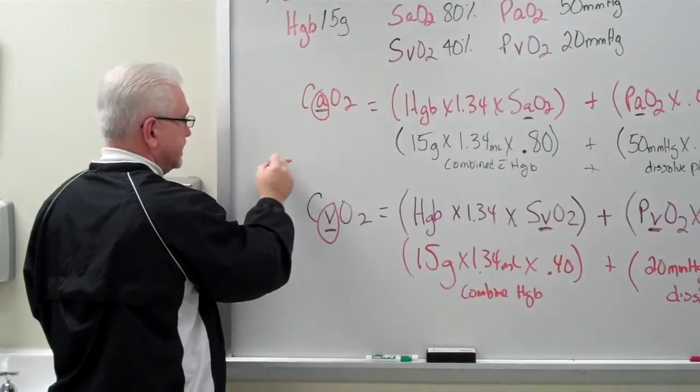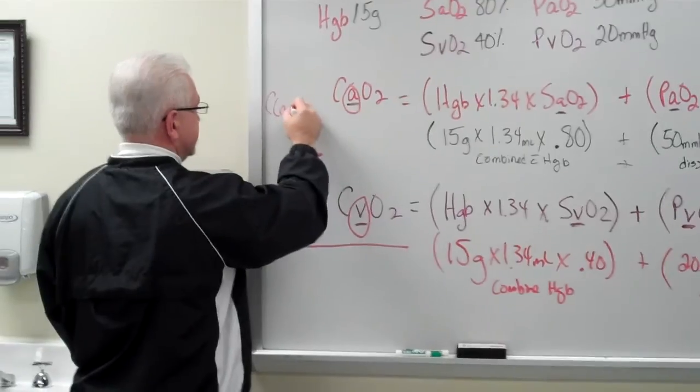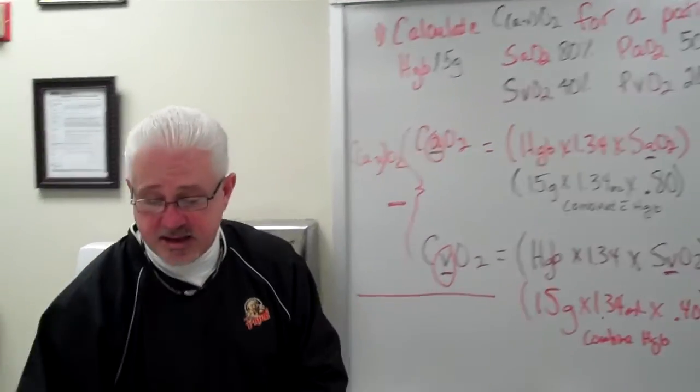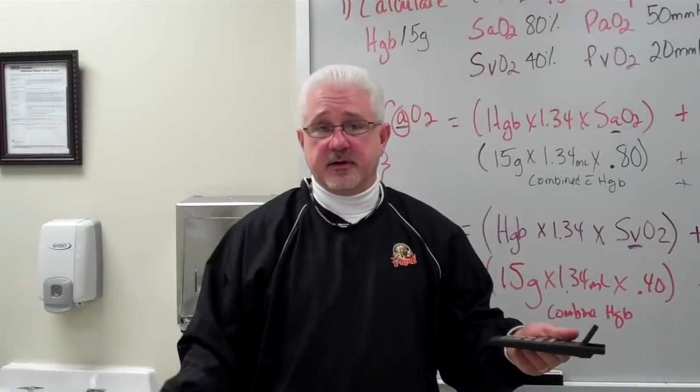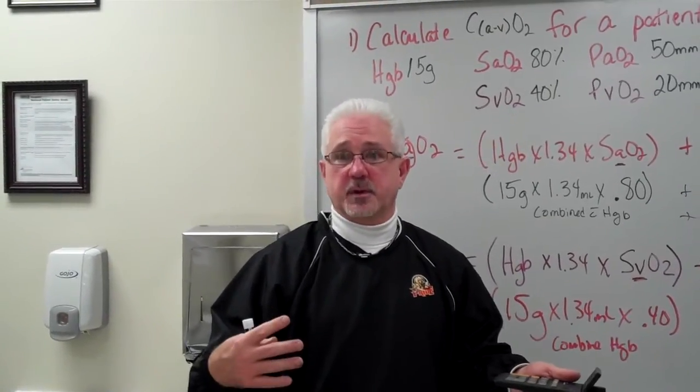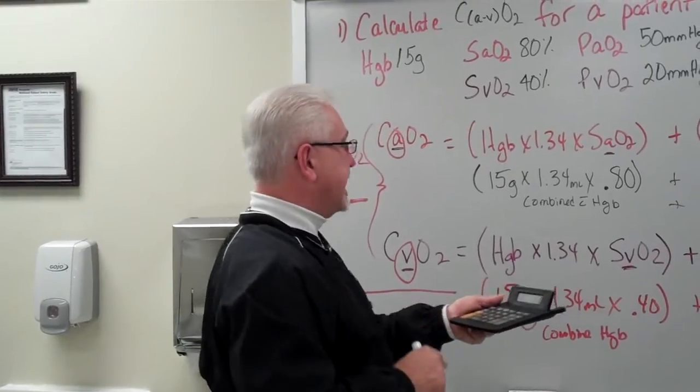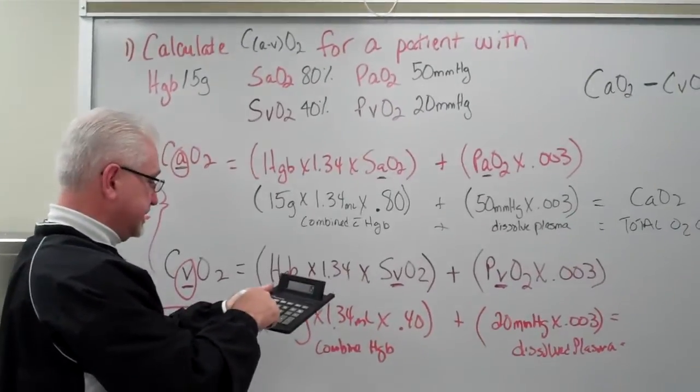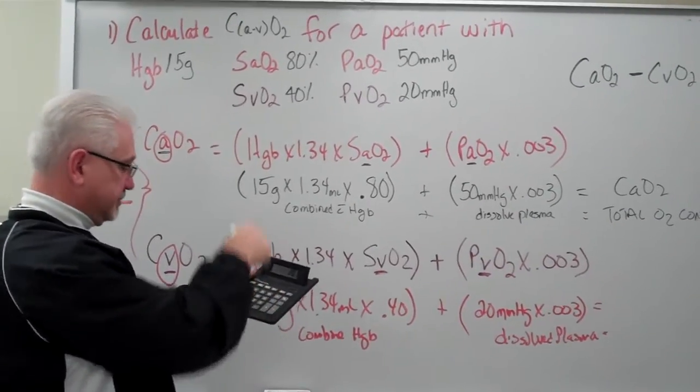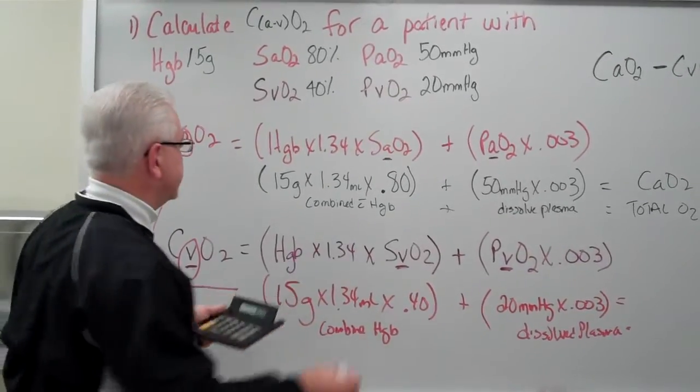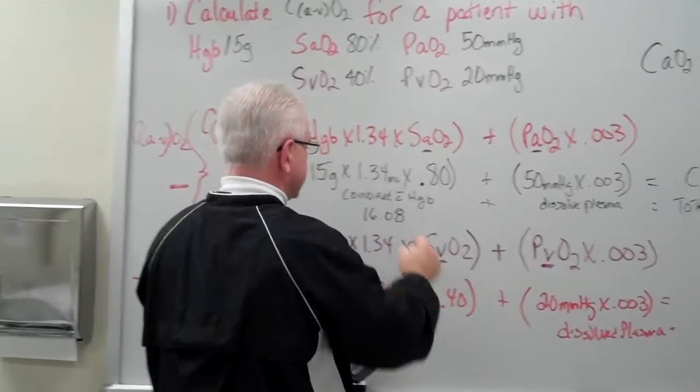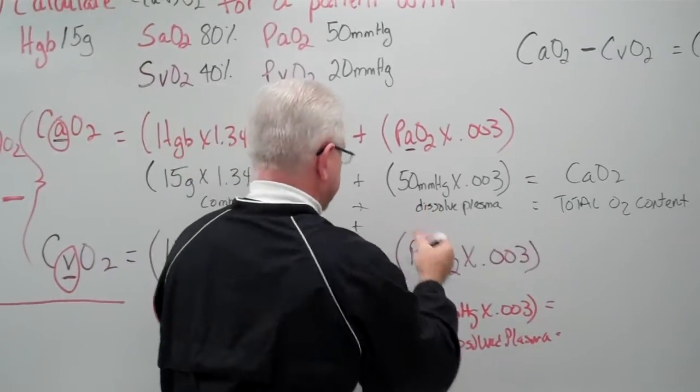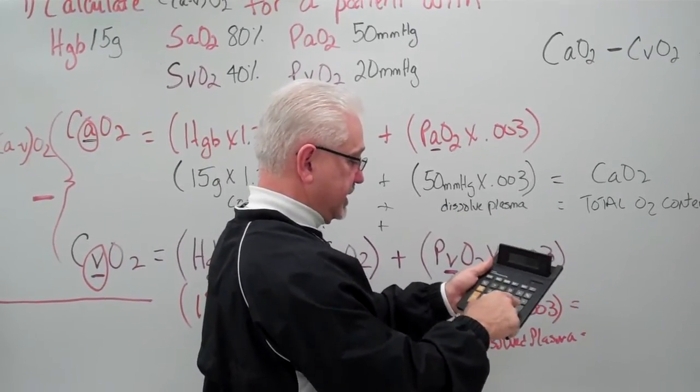This is venous. This is arterial. And I'm doing the subtraction. And this is my CA minus vO2 formula when I do the two of them together. So, now we're going to go ahead and just do the math. I wouldn't round anything until the very end. A vols percent is milliliters per deciliter. Now, I'm going to take my calculator and go 15, doing this one up top here for the combined with the arterial blood. 15 times 1.34 times 0.8 equals 16.08. Plus, I'm going to clear that out. 50 times 0.003 equals 0.15.